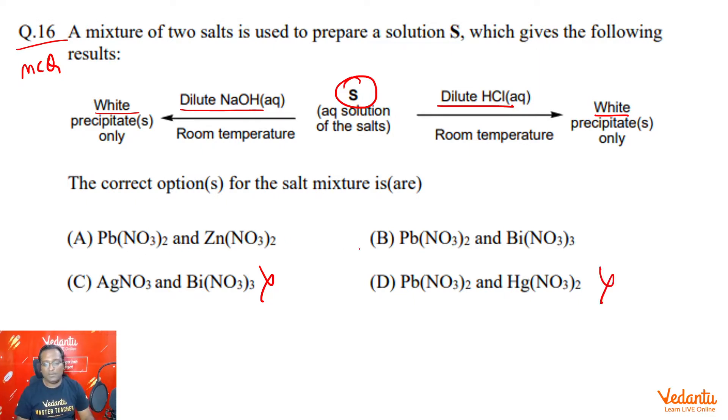Now, both of these are possible answers, A as well as B. Because they do not say that both of the compounds have to form a precipitate. Even if we get one white precipitate and the other is soluble, that should be marked as an answer here. Therefore, the answer here is A as well as B.